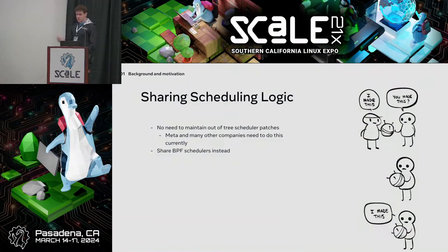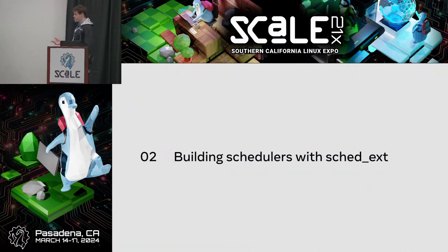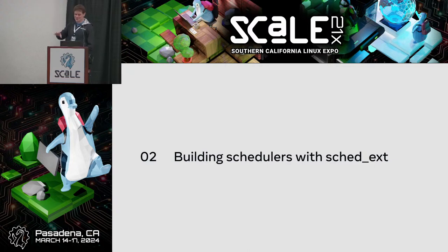A big thing is just the ability to share scheduling logic. If we have our own custom patch for our scheduler and I want to share it, it only works with a specific version of our kernel. With SCX there's a core API that tells you what you need to implement to be a scheduler and you can share that pretty easily. People can load and experiment on their own machines pretty easily. I debated about putting code on slides and decided some of it is short enough that it's worth showing exactly how short it is.